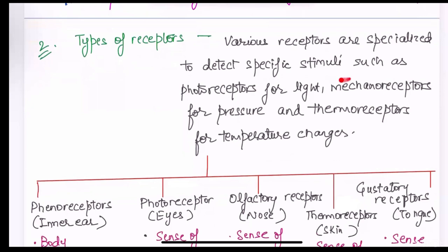There are various types of receptors which we will be discussing today. Specific stimuli such as photoreceptors for light, mechanoreceptors for pressure and thermoreceptors for temperature changes.